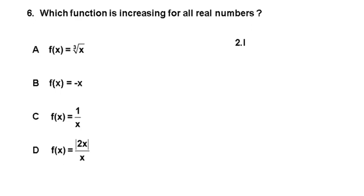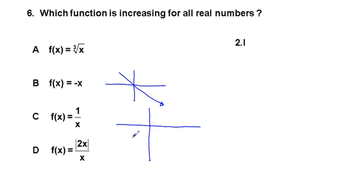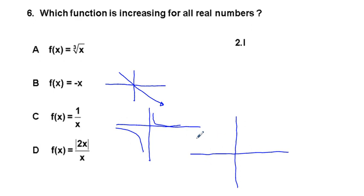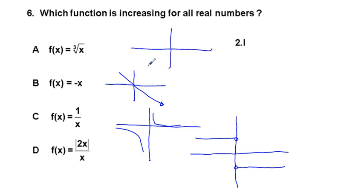Problem 6: Which function is increasing for all real numbers? f(x) = −x is decreasing for all real numbers. f(x) = 1/x is also decreasing for all real numbers. f(x) = |2x|/x behaves like a jump discontinuity — neither increasing nor decreasing for all real numbers. The function f(x) = ∛x (cube root of x) is the one that is increasing for all real numbers.